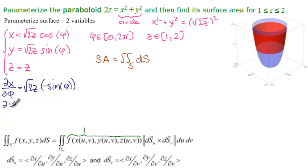Delta y delta phi. Again, the square root of 2z. Now we just have cosine of phi. And then delta z delta phi is 0 because there's no phi.